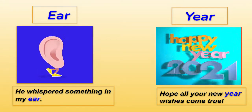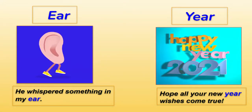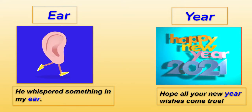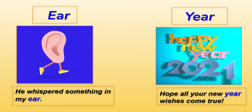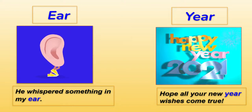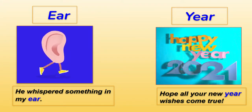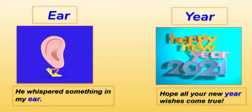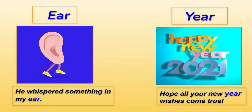Now 'year' and 'ear.' Y-E-A-R is when we are talking about 365 days — from January to December, one full year. E-A-R is the part of our body — 'He whispered something in my ear.' So E-A-R is the human body part, and Y-E-A-R is one full year from January to December. I wish you a happy new year — may God bless you all with lots of happiness.